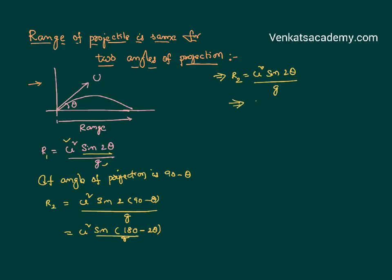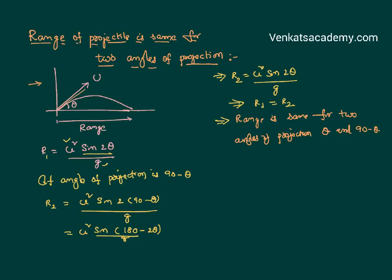From this equation it is very clear that the range of the first case is equal to the range of the second case. So we are proving that the range of a projectile is the same for two angles of projection: theta and 90 minus theta. If projected with an angle 90 minus theta, it may have a different maximum height, but it is going to have the same range.